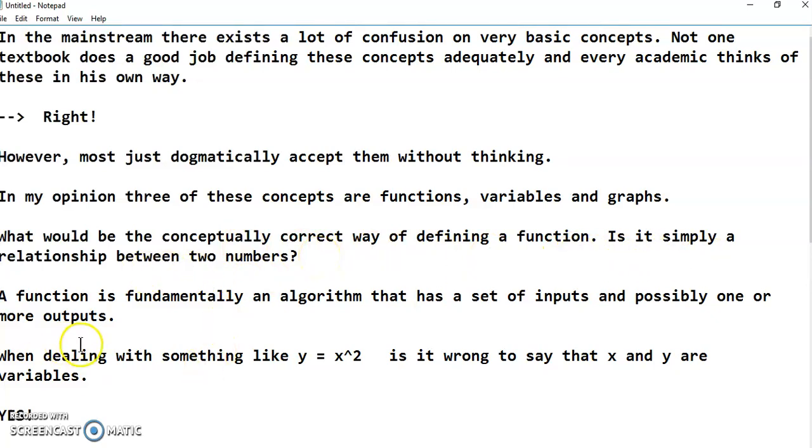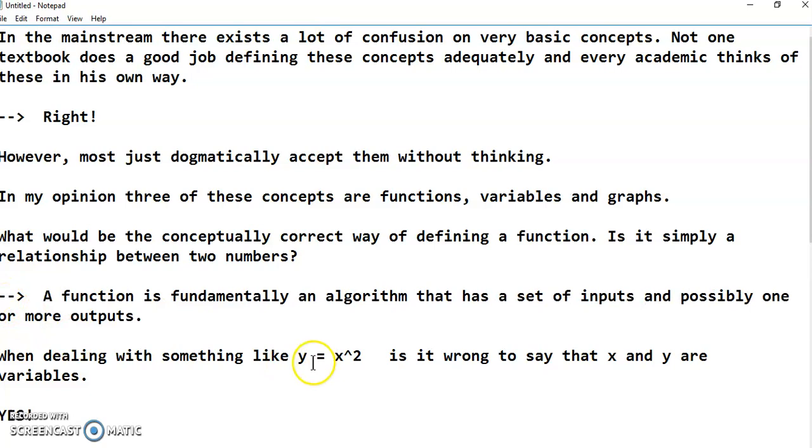So of course my response is a function is fundamentally an algorithm that has a set of inputs and possibly one or more outputs. So for example, the Euclidean algorithm has two inputs, one output, and possibly more than one iteration.